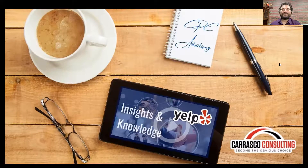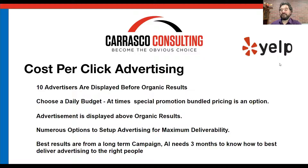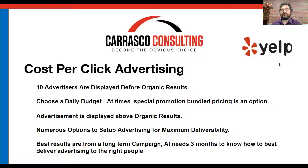When you talk about exposure, it's all about how people are seeing you — and that's what Yelp cost per click advertising is. There are 10 advertisers displayed before organic results, which is why you really want to consider the enhancements as well as CPC advertising. You can choose a daily budget, and at times there are special promotions bundled into pricing where you might get the enhanced profile or business highlights for free above a certain spend threshold. Talk that over with your Yelp advertising partner. The advertisement is displayed above the organic results and there are numerous options to set up advertising for maximum deliverability.